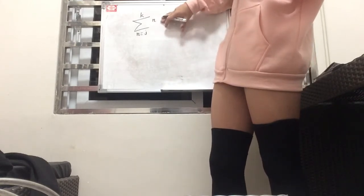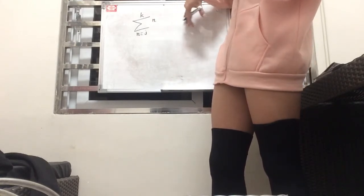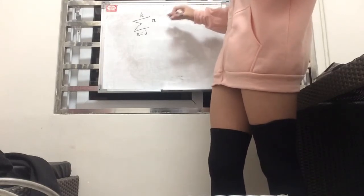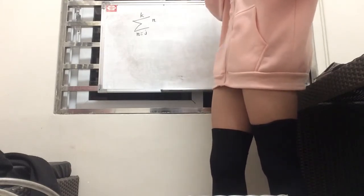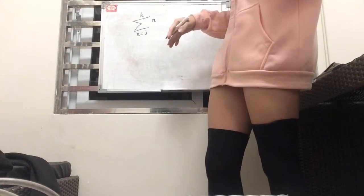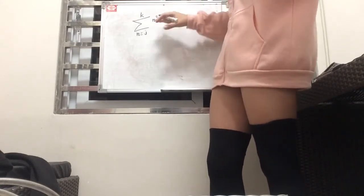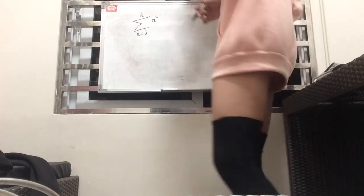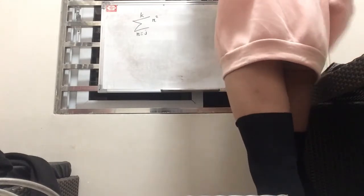We have our element, which is probably n, and it's basically going to tell us what operation we're going to do on every number that's going to be added to each other. Since it's just n, we're just going to be adding the numbers themselves. But if it's something like n squared, we're going to be squaring the numbers and then adding them.